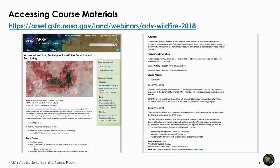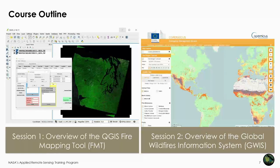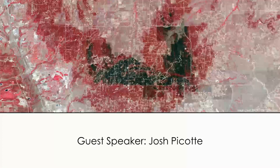To access course materials, go to our website where you'll find registration information, the course agenda, session details, and access to homework and exercises. This week, Session 1: Josh will give an overview of the QGIS Fire Mapping Tool. Next week we'll focus on the Global Wildfire Information System, or GWIS. I'll now turn it over to Josh.